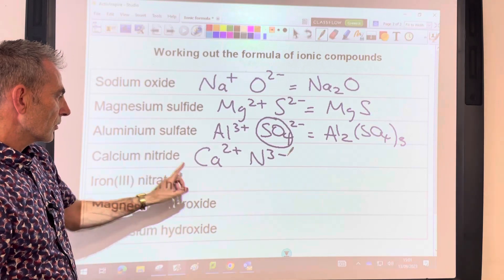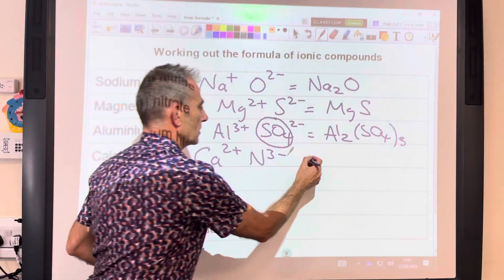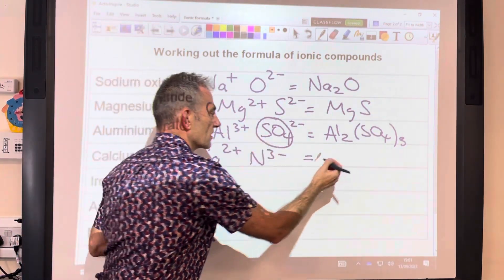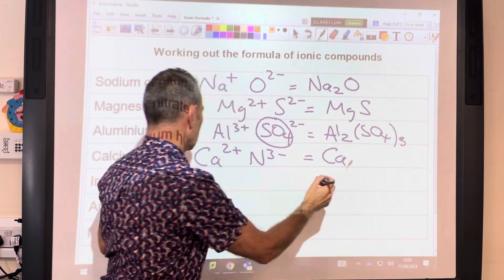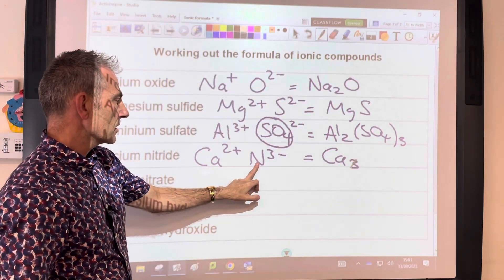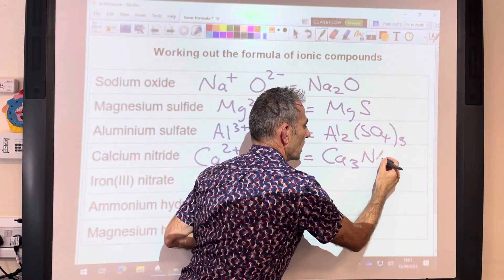We need to get them up to 6 again, 2 plus 3 minus. So we need 3 of those because 3 times 2 is 6. So Ca3, and the nitride needs to be multiplied by 2 to get it up to 6 minus. So it'll be Ca3N2.